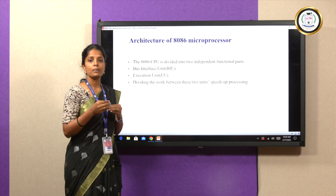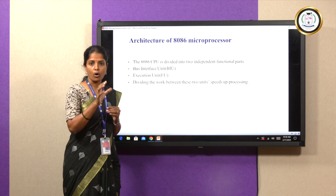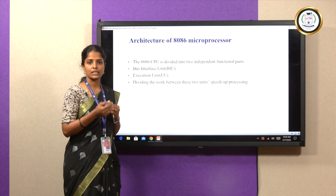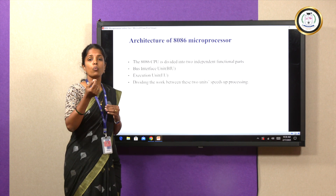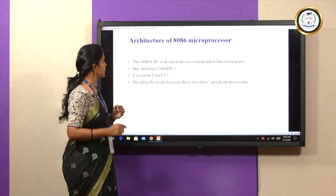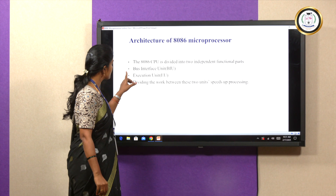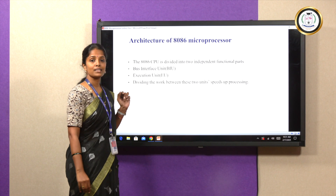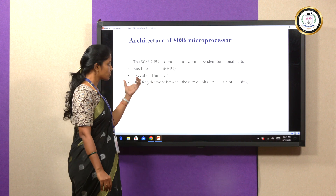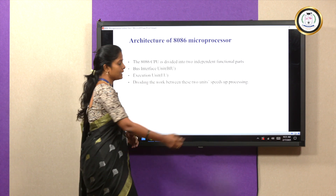One is minimum mode and the other is maximum mode. In minimum mode, it works as a single microprocessor performing all functions. In maximum mode, it works as one microprocessor in a multiprocessor environment. The architecture of the 8086 microprocessor is divided into two functional units — the bus interface unit and the execution unit — so that the speed of the microprocessor can be increased.